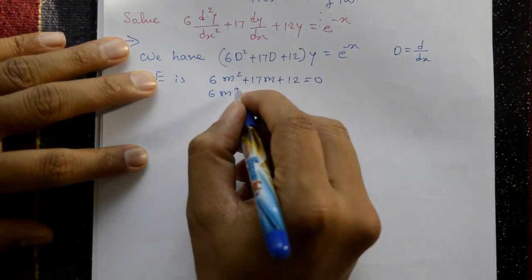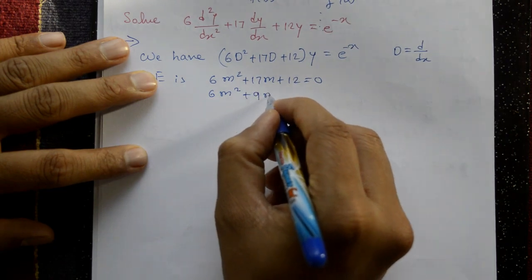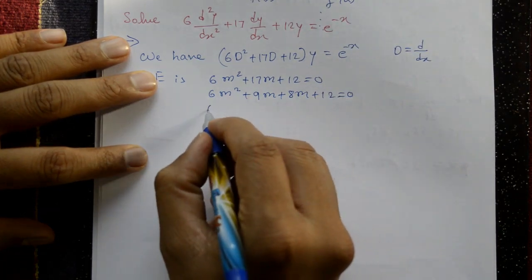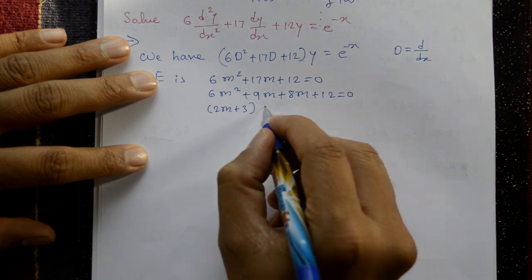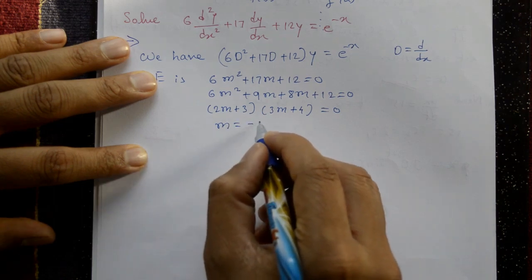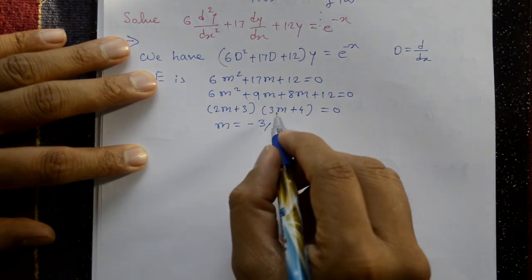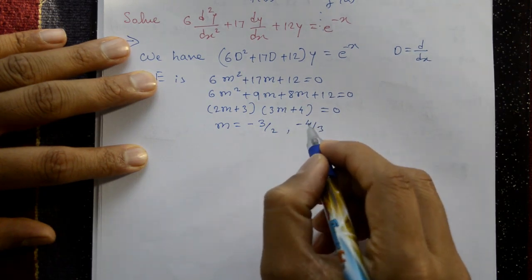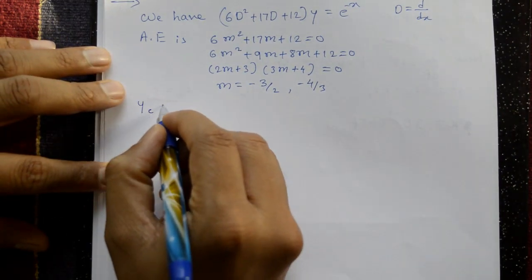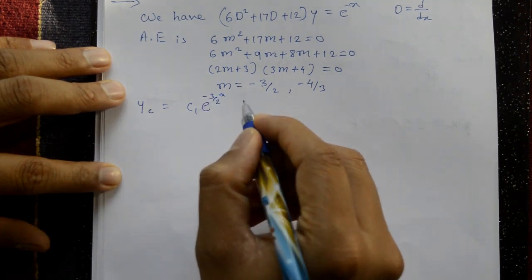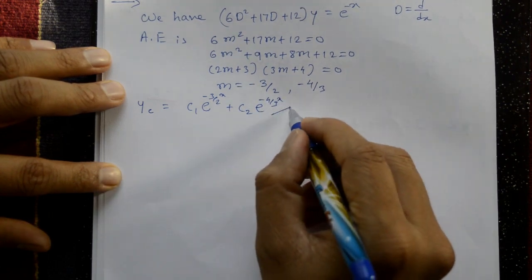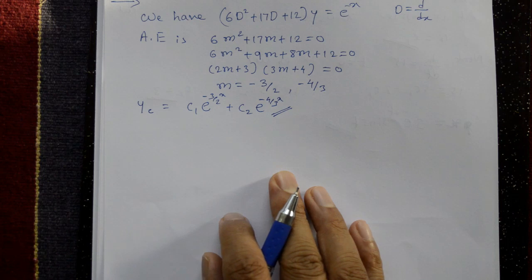Factoring: 6m² + 9m + 8m + 12 = 0, giving (2m + 3)(3m + 4) = 0. So m₁ = -3/2 and m₂ = -4/3. The roots are different, so the complementary function is: yc = c₁e^(-3x/2) + c₂e^(-4x/3).